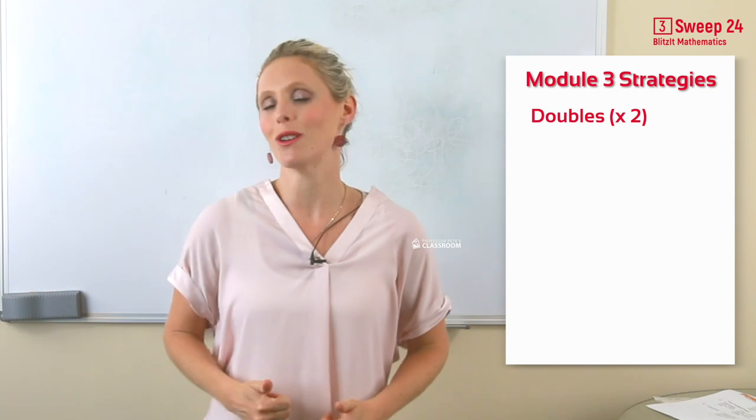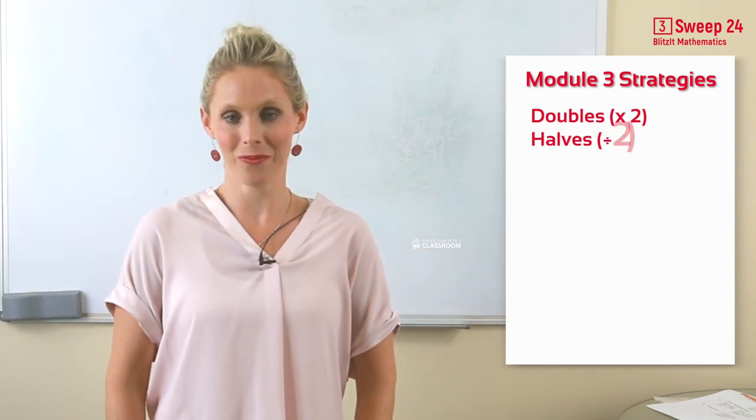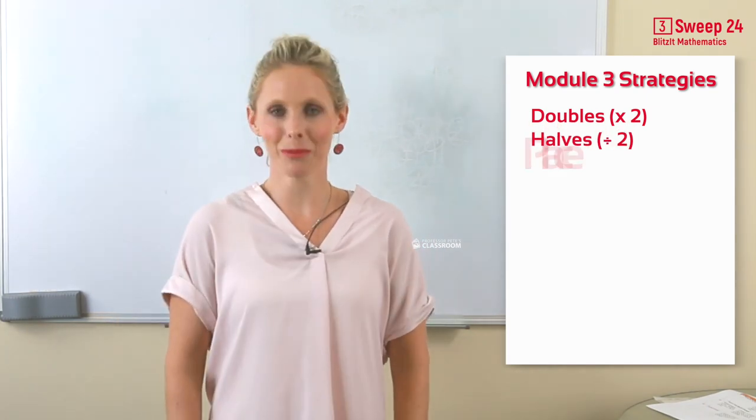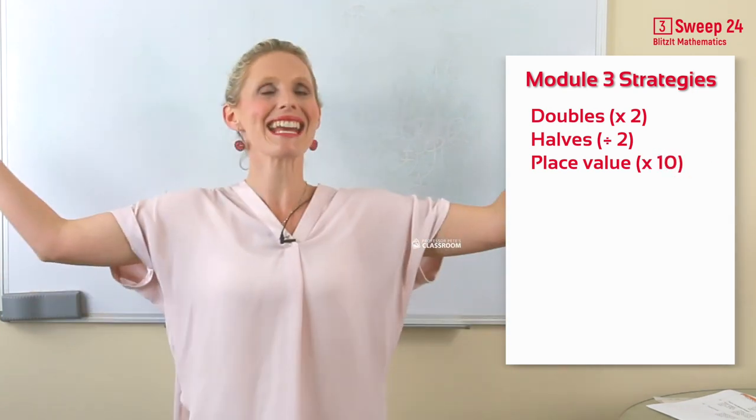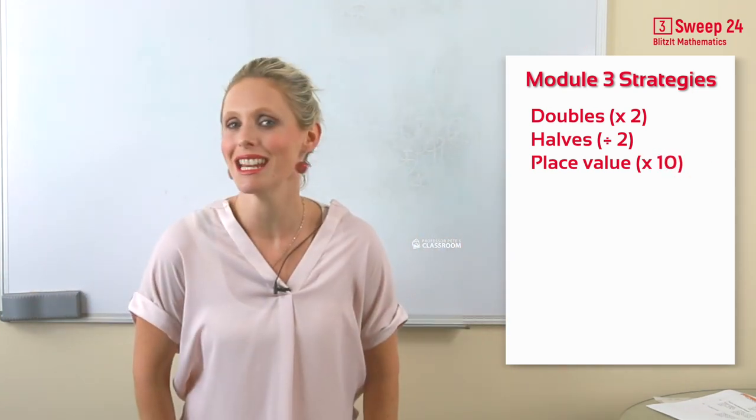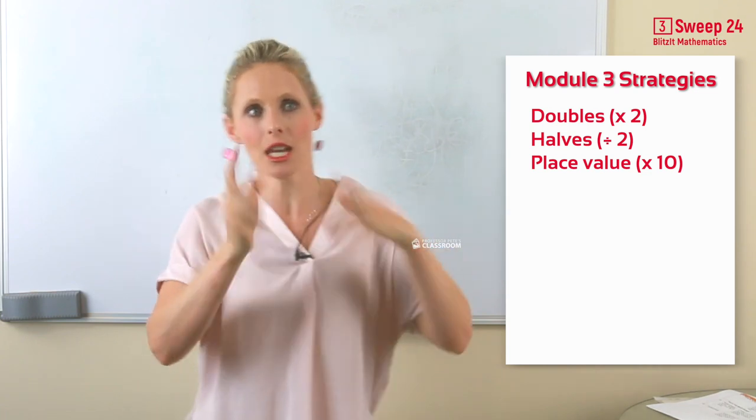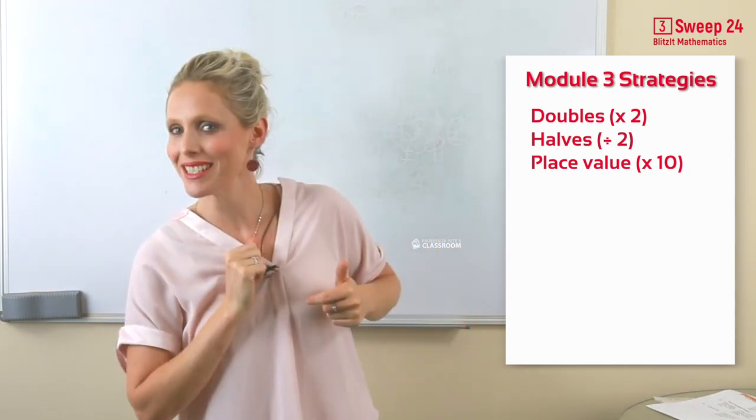And then moving on to divided by 2. Then we've got multiplying by 10. Hey, place value is what you need. For example, 7 tens equals 70.